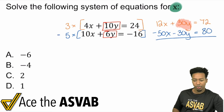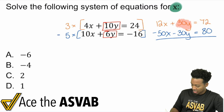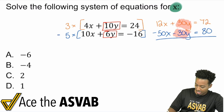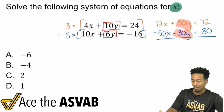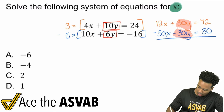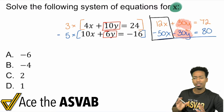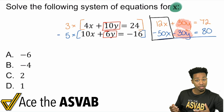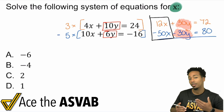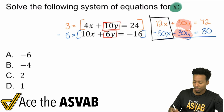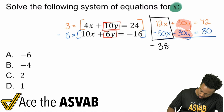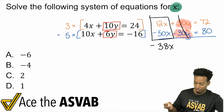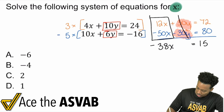So what's the purpose of all this? I now have 30Y and negative 30Y. If I add these equations together, those Ys eliminate as predicted. I have 12X plus negative 50X — treat that like 50 minus 12, which is 38, but keep it negative since positive 12 minus 50 is negative — so negative 38X. Then I add 72 and 80 together, which gives me 152.